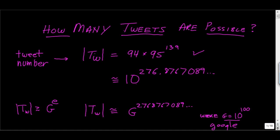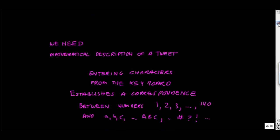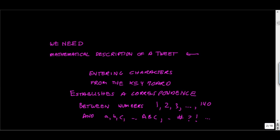To get a count of the number of possible tweets, we have to come up with a mathematical description of a tweet. When you enter characters from the keyboard, what you're doing is establishing a correspondence between the numbers 1 through 140 and the characters available on the keyboard — including funny characters like question marks, uppercase and lowercase, at signs, and so forth. When you establish a correspondence, that in mathematics is describing a function.